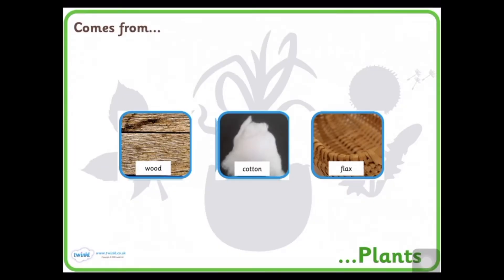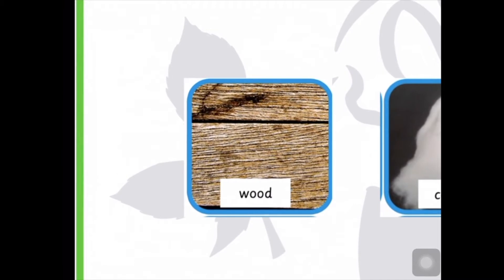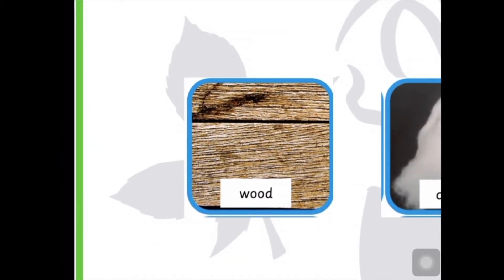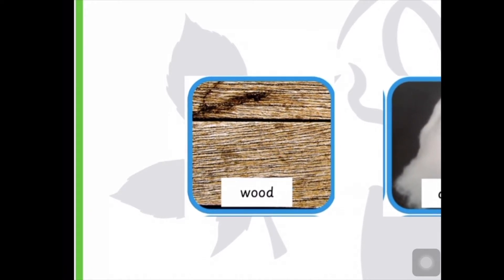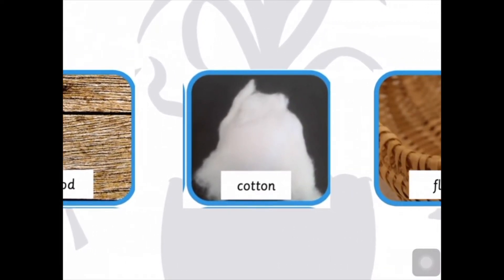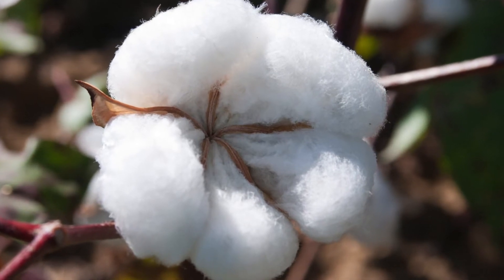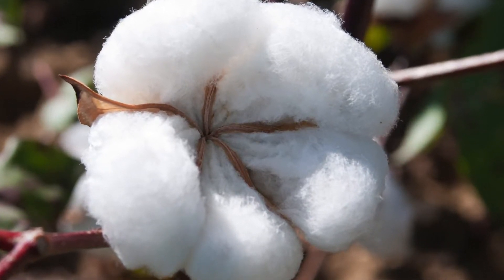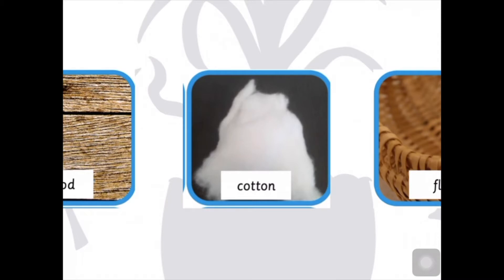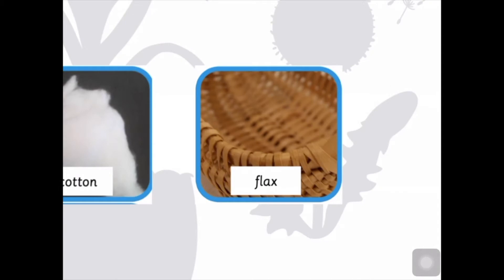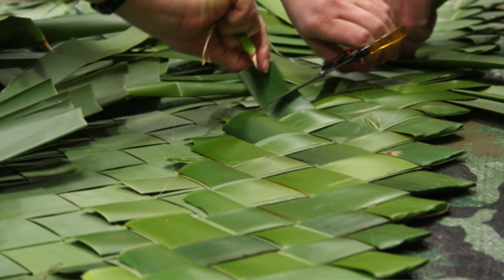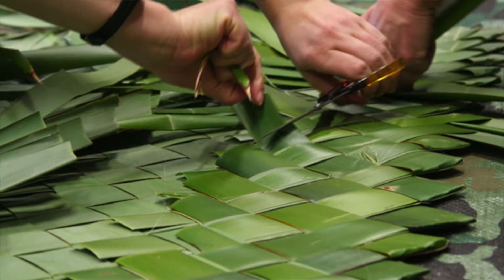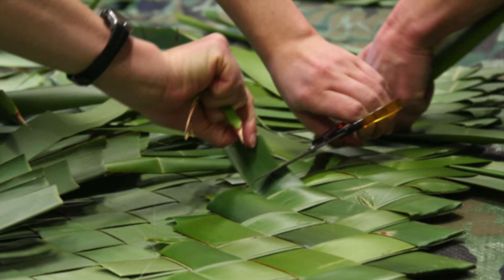Let us take a look at materials that come from plants. Did you get all these three answers? Wood is pretty obvious as wood comes from stems and roots of trees and other woody plants. It is used for building houses, benches, fences, and lots of other things. What about cotton? Cotton is a soft fluffy material that grows around the seed of the cotton plant. The cotton is spun into yarn to make a soft breathable fabric. Flax is a plant. People make use of the flax leaves since it is tough and also bendable, so people like to weave them together to make furniture and baskets.